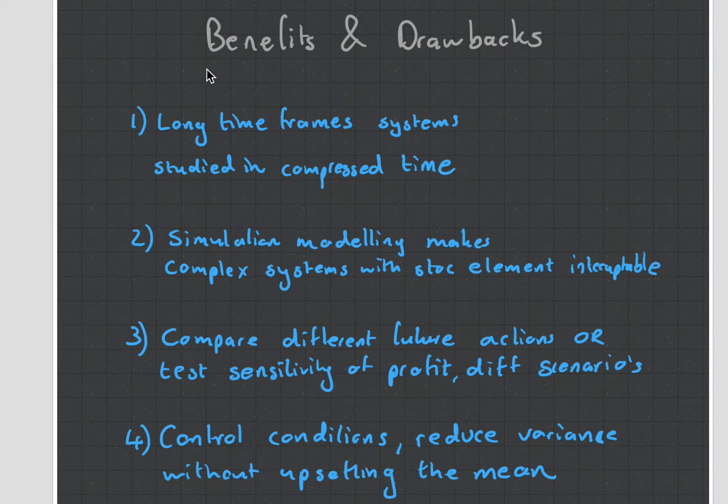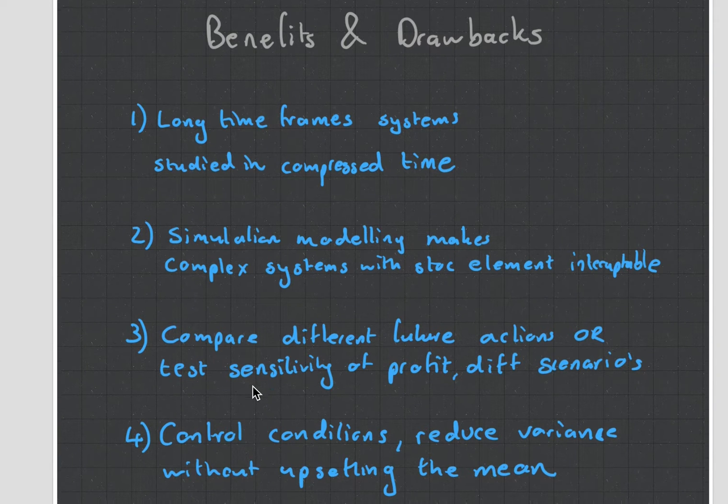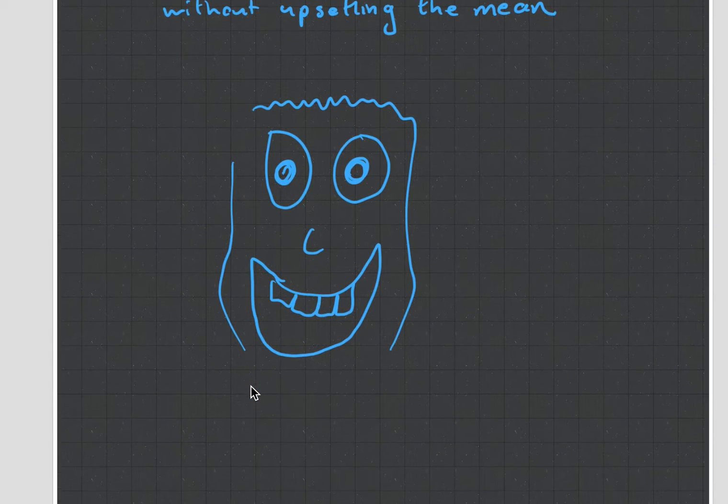It's very good to look at the benefits of having a model. They can compress a long time frame into something very short so you can predict time. They can do simulation models, cope with complicated systems, compare different futures like if I did this what would happen versus that. What it allows you to do is control conditions, which means variance gets reduced. Models are cool.